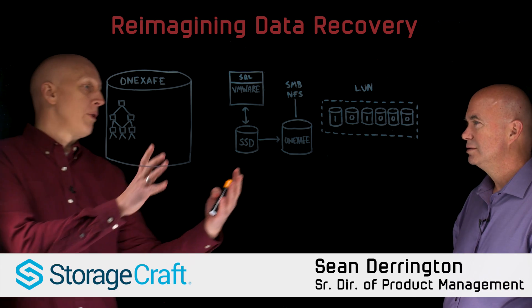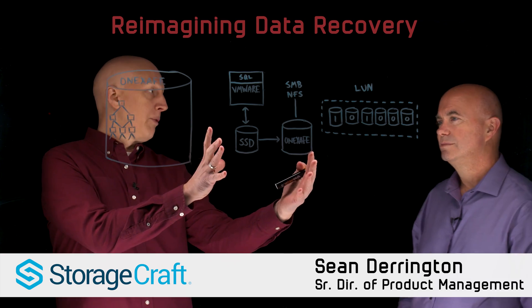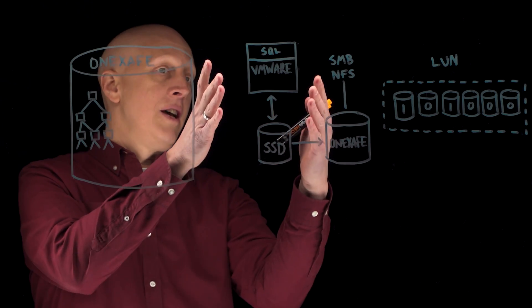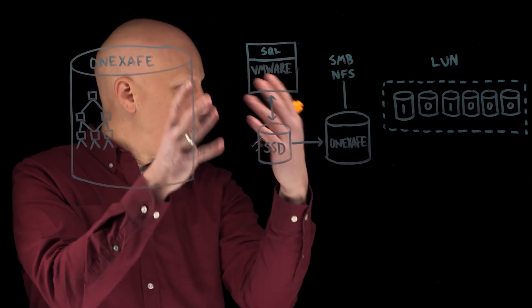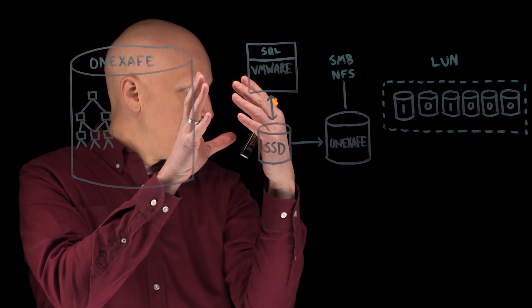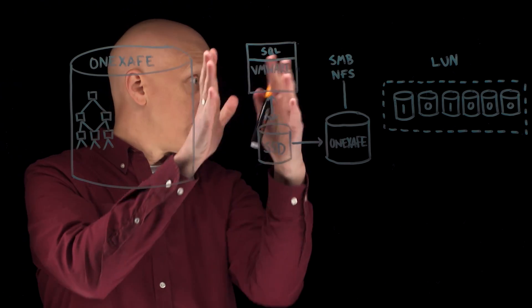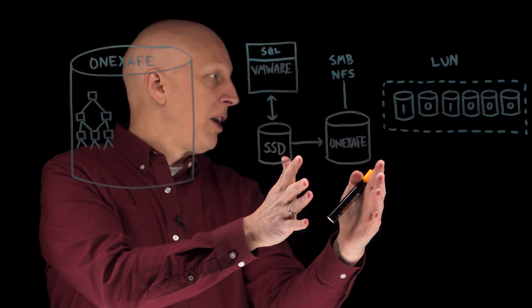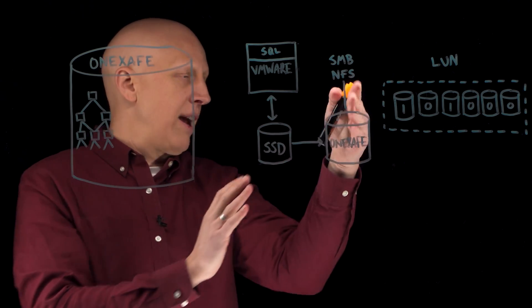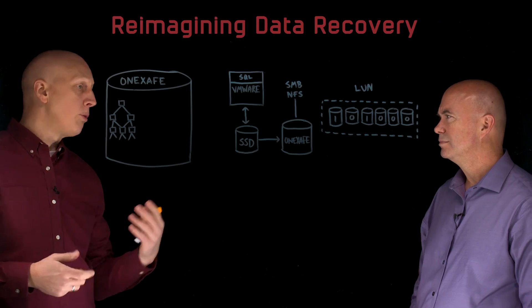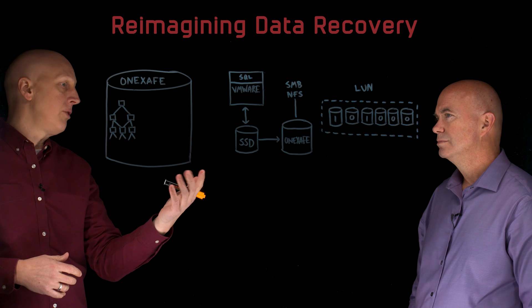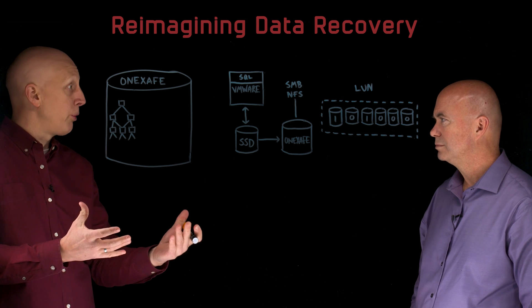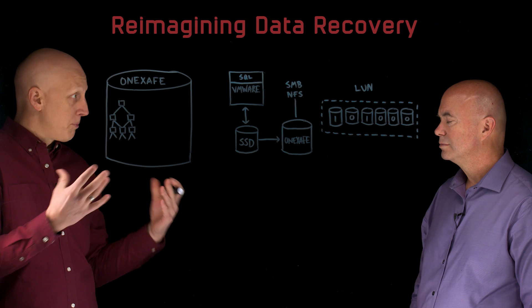For the first video, we talked about really reimagining data protection — how you're going to protect this information. Snapshots through VMware for the structured data or physical servers as well. But then most of the data that's unwieldy is the unstructured data: SMB and NFS. What OneSafe is, is a converged scale solution that actually satisfies both of those. So that's for the protection side.